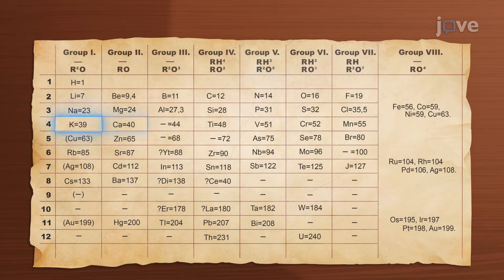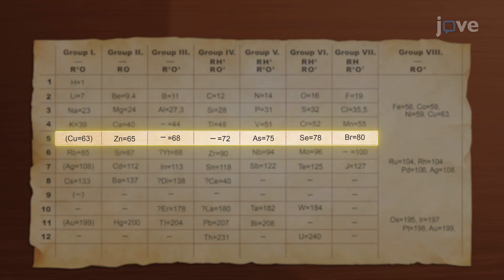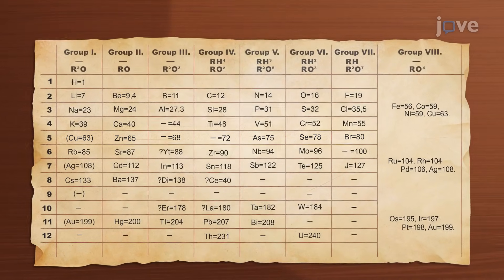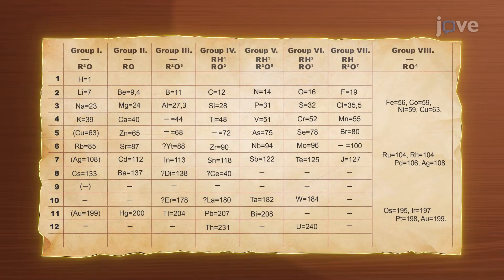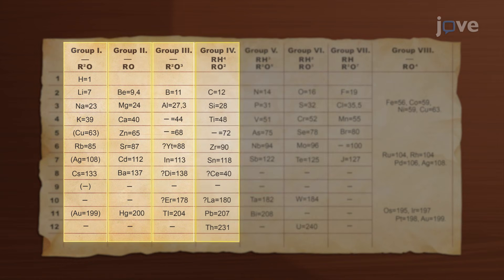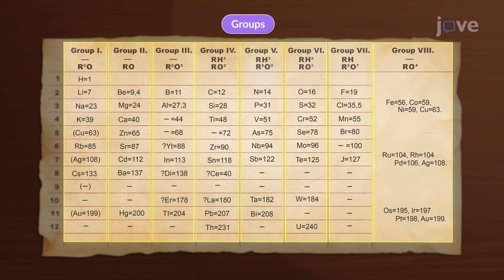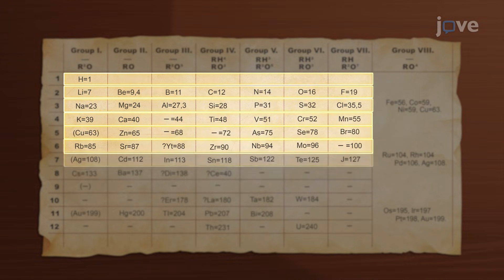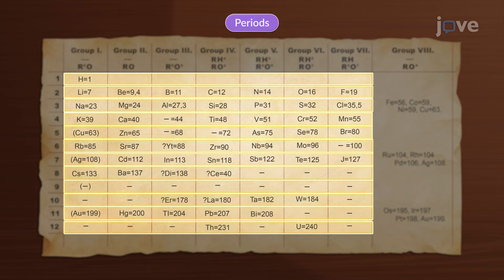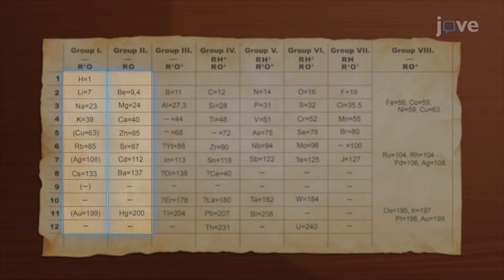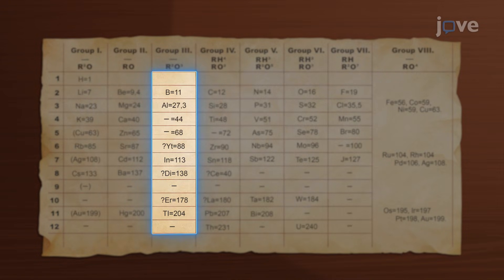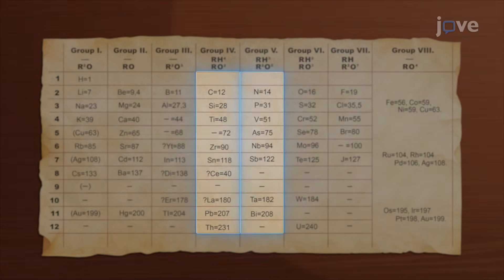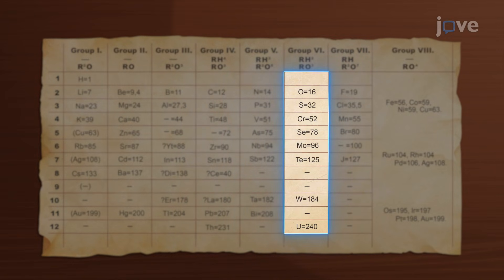After putting eight elements in each row before moving to the next, a clear pattern emerged. The vertical columns are known as groups, while the horizontal rows are called periods. Elements within a group share similar traits, almost like members of a family.